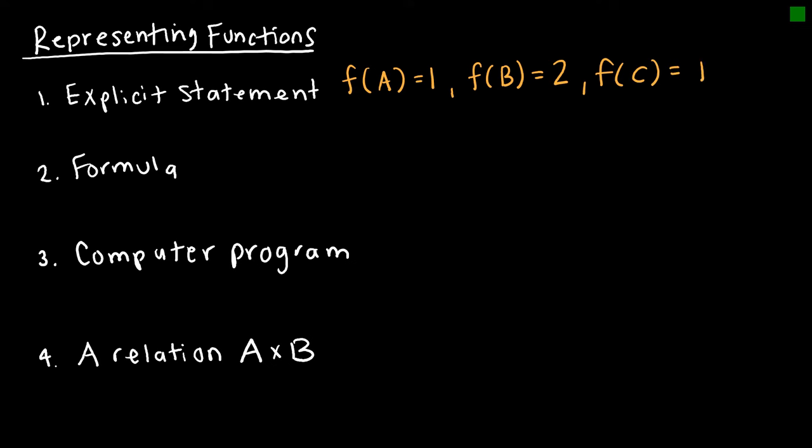And so this would be an explicit statement telling me that a maps to 1, b maps to 2, and c maps to 1. So that would be an explicit statement because there's no formula or function. It's just here's what maps to this.